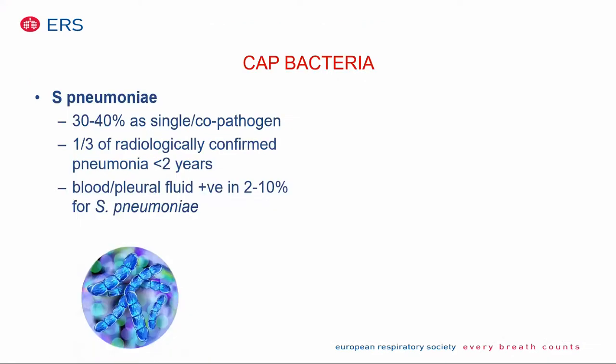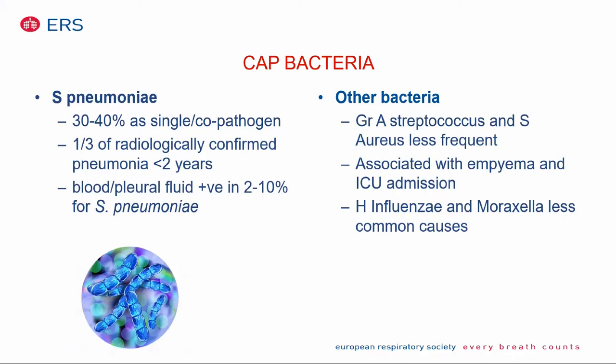Regarding bacterial CAP, strep pneumoniae is found in 30 to 40% of cases as the single or co-pathogen. In uncomplicated CAP, blood cultures or pleural fluid cultures are only positive in 2 to 10% of all cases, so they don't seem very useful in uncomplicated CAP. Other bacteria are Group A Streptococcus and Staph aureus — they are less frequent but are associated with more severe disease, including metapneumonic effusion and ICU admission.